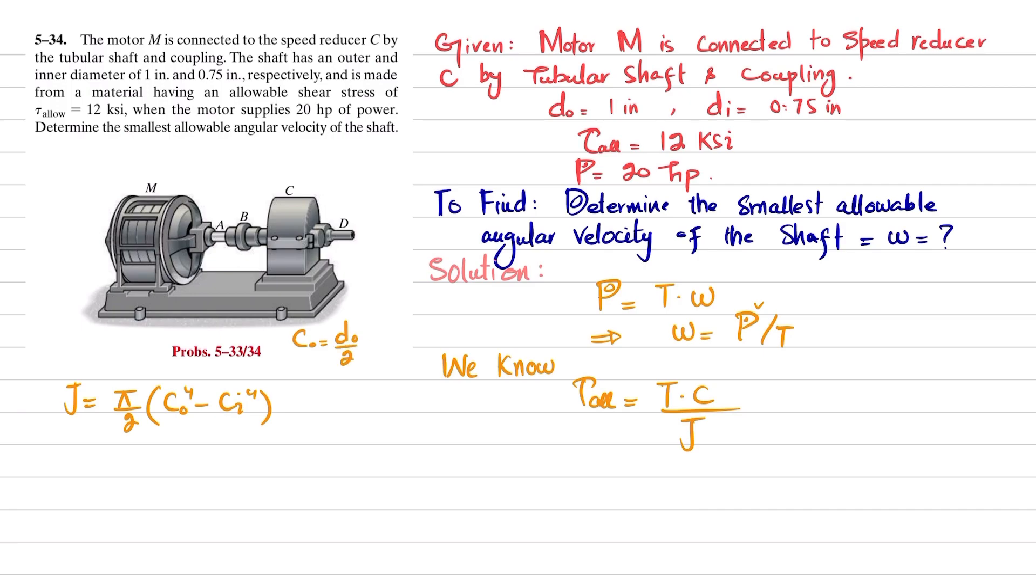c_o is equal to d_o over 2, which is equal to... c_o is 1, so 1 by 2 is 0.5. So we have 0.5 inch. And c inner is equal to d inner divided by 2, which is equal to 0.75 divided by 2, which is 0.375 inch.